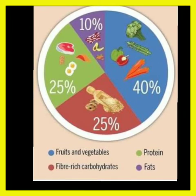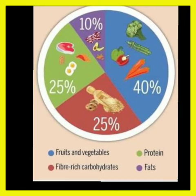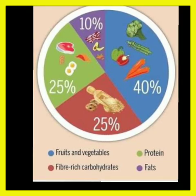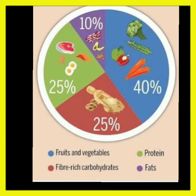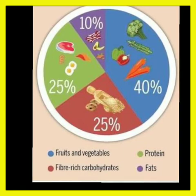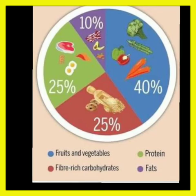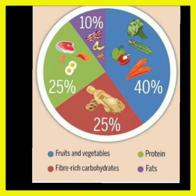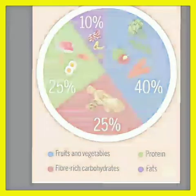In a balanced diet, 40% should be fruits and vegetables, 25% carbohydrate foods, 25% protein food, and 10% fat. We should take fruits and vegetables in a high amount to keep our body healthy. Children, hereafter you should eat a balanced diet every day.